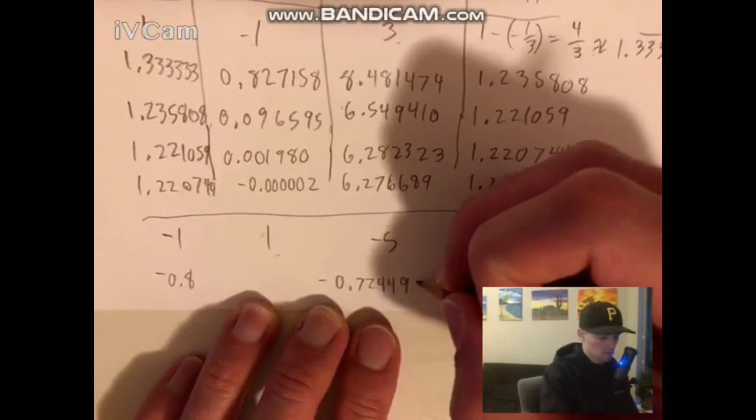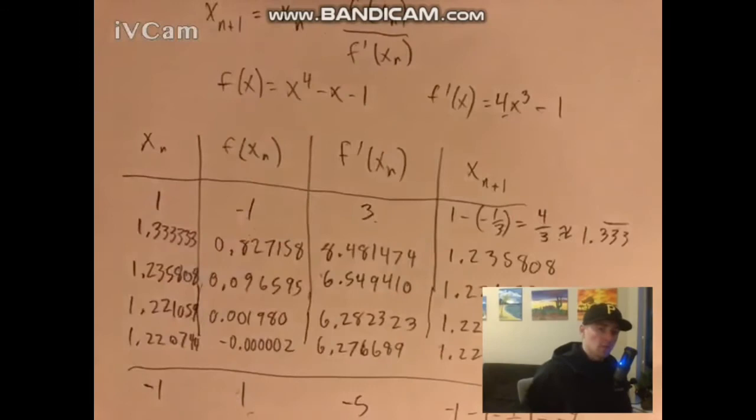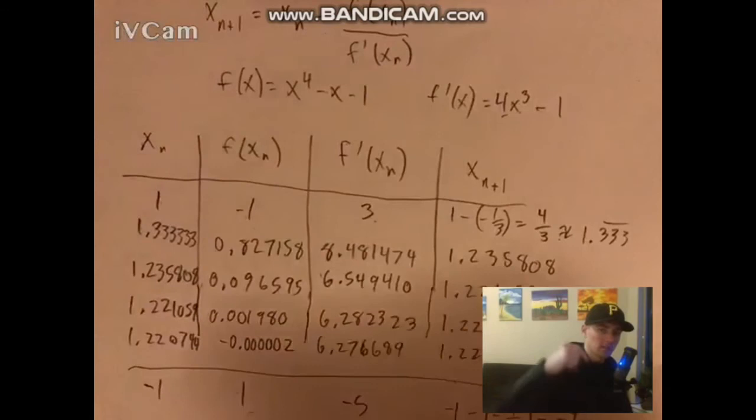That second root is -0.724492 to six decimal places — go ahead and give that a try yourself. If you want more help working through Calculus 1 problems, check out my complete Calculus 1 package — there's a link in the description. It has all the tools you need to do well in your Calc 1 class. Hopefully you found this video helpful. Thanks and see you next time.